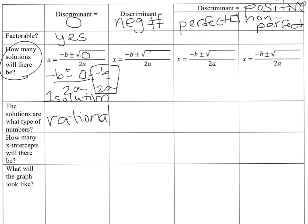If we graph something that has a discriminant of zero, it has one solution, so there is one x-intercept. These things make parabolas, so a discriminant of zero means a parabola that hits the x-axis in just one place — the vertex of the parabola sits right on the x-axis. It could open up or open down, but it touches the x-axis at exactly one point.